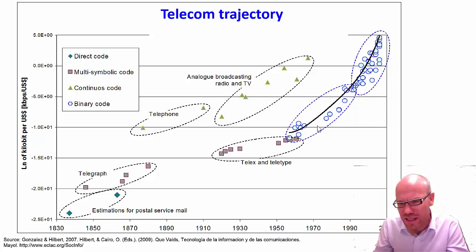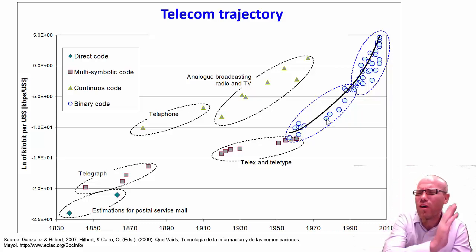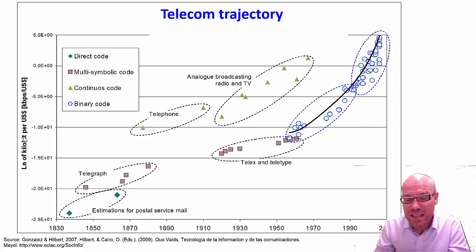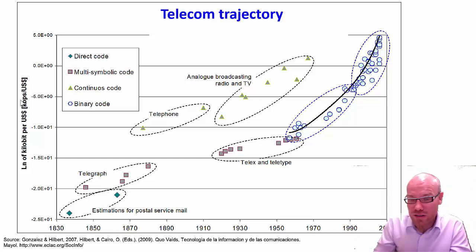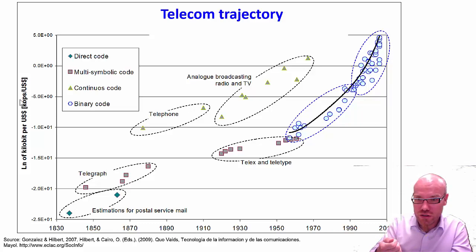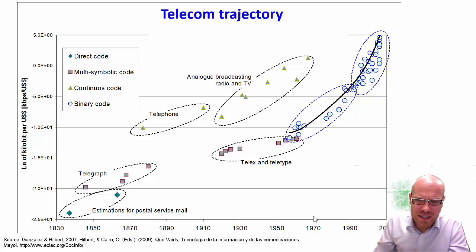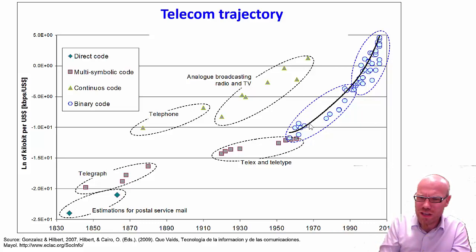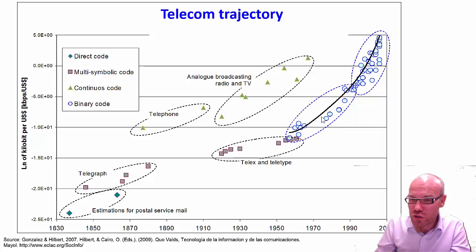We can see that around here in the 1970s something qualitatively different seemed to have happened in the trajectory. It seems like telecommunication technology suddenly kind of hit a wall in the 1970s and went straight up in performance. Performance in this case is measured as the number of kilobits per second per US dollar — that is, the amount of information you can telecommunicate per dollar spent. Starting in the 1970s, you could send a lot more information at a much lower price, and this trajectory started to grow exponentially.